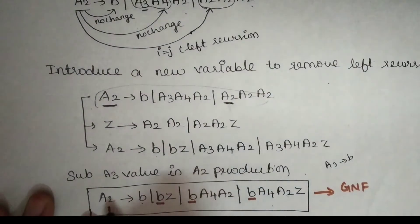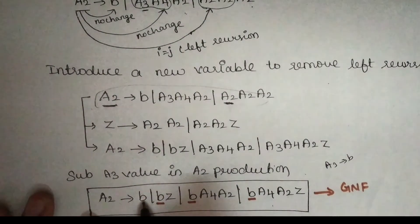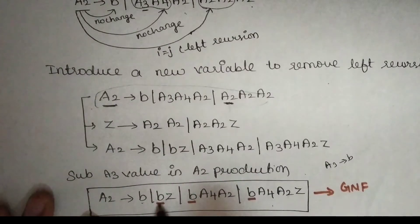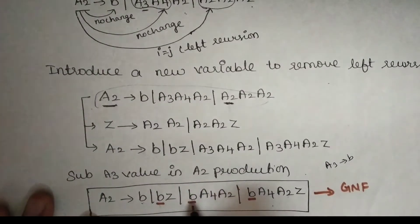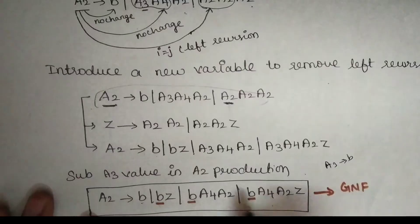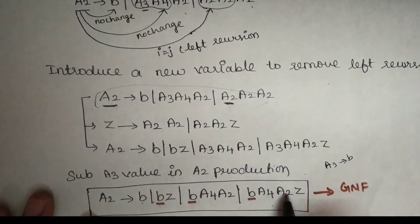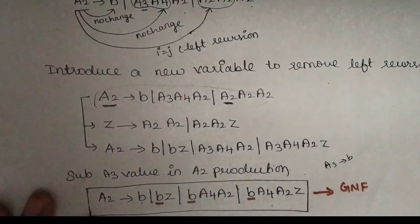Non-terminal goes to terminal — this is GNF format. GNF means: non-terminal goes to one terminal and any number of non-terminals. One terminal, any number of non-terminals.